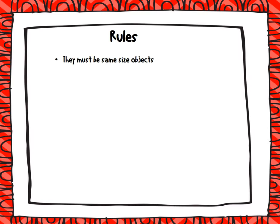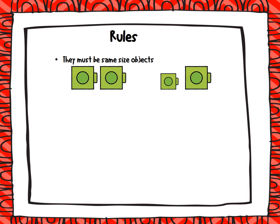So before we start measuring, there are some rules. And so our first rule is that they must be the same size objects. So for example, we might have some cubes. Well, they have to be the same size cubes. They can't be different sizes. We can't have one that's small and one that's bigger. So that's our first rule.